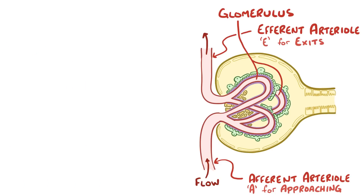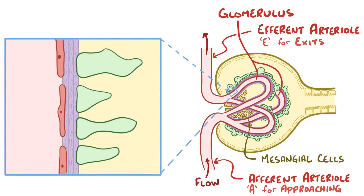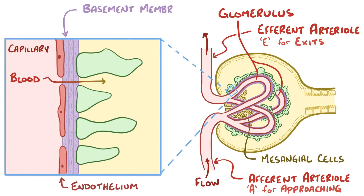The glomeruli are a tiny cluster of capillaries that are physically supported by mesangial cells. When blood is filtered, it moves through the endothelium lining the capillary, then through the basement membrane, then through the epithelium lining the nephron, and finally into the nephron itself, at which point it's called filtrate.